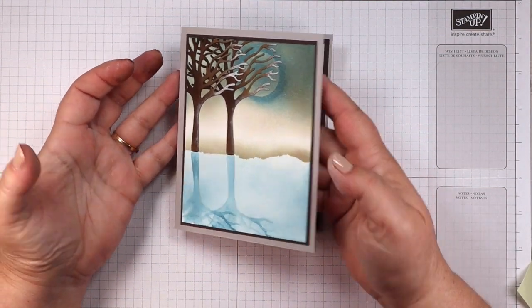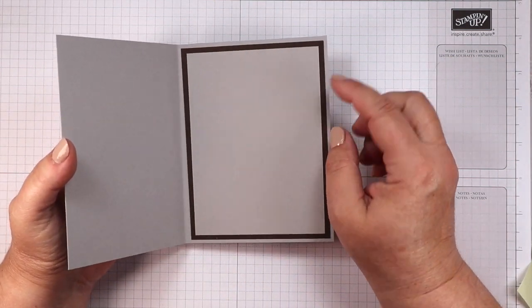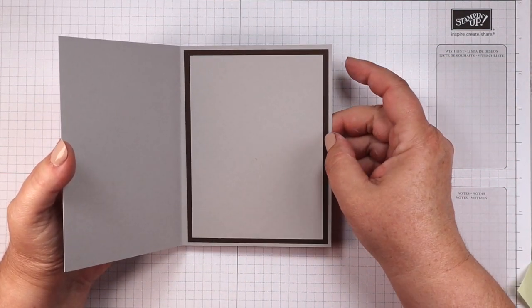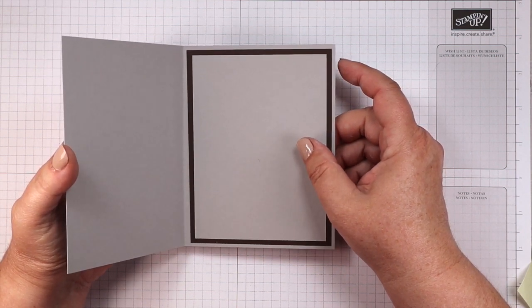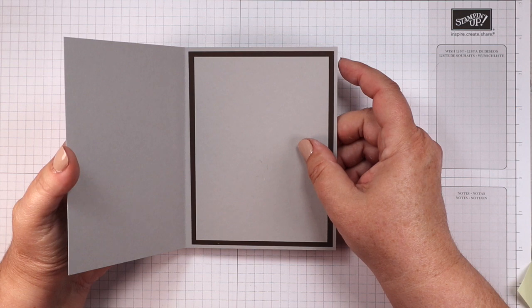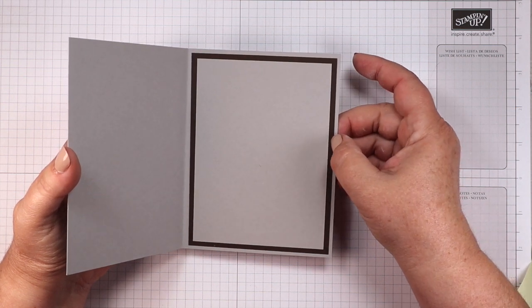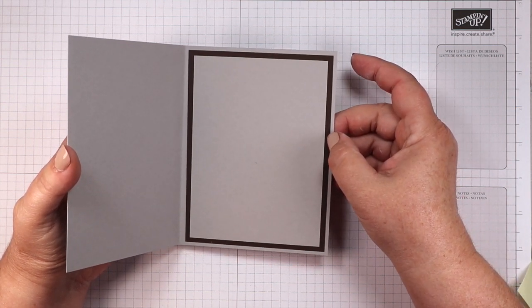Isn't that pretty? And inside the card I have a smoky slate panel in here. It's three and three quarters by five, and then the early espresso panel is four by 5.25.